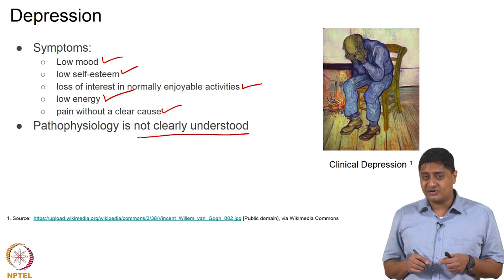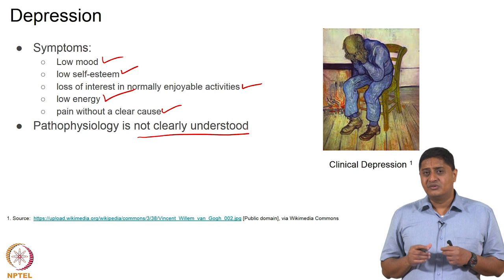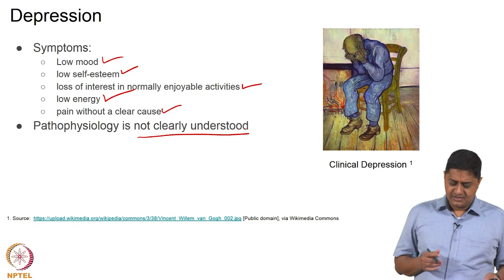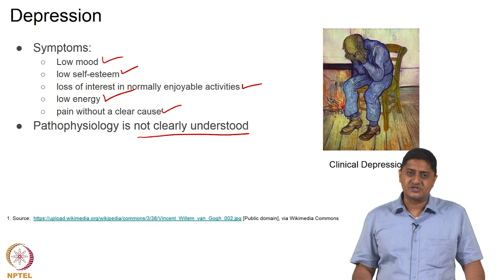It is believed that Basal Ganglia must form an important part, or at least play some role, in disorders such as depression. However, the exact role of Basal Ganglia in depression is not completely understood. This remains an open question for the future, and we need to continue research to understand why depression is caused and what approaches towards its treatment are effective.